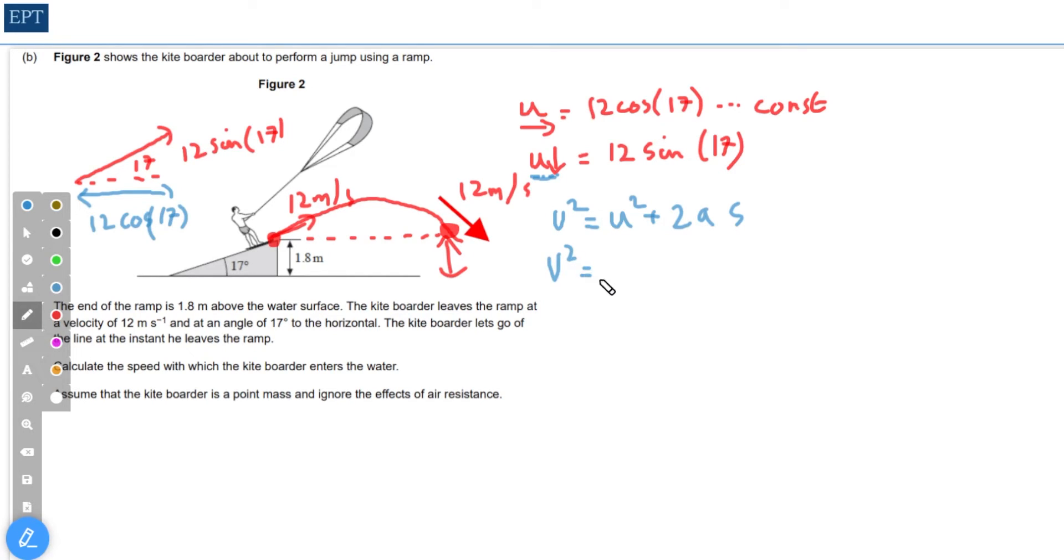We know that a is 9.8 and s is 1.8, so we can say that v squared going downwards is going to be 12 sine 17 all squared plus 2 times 9.8 times 1.8. Plugging in the numbers and square rooting the answer to give us v, I get 6.9 meters per second. Remember, that's downwards.